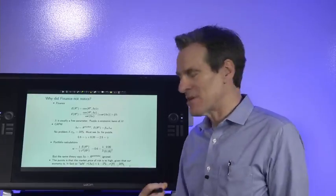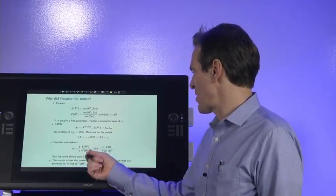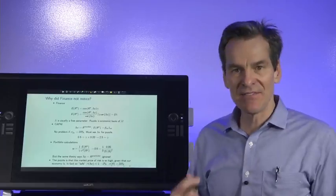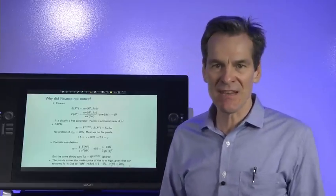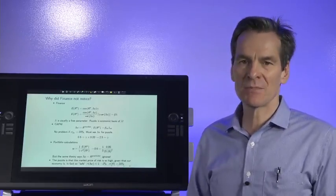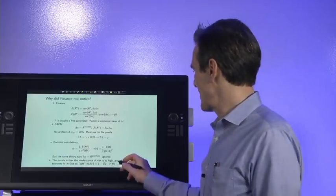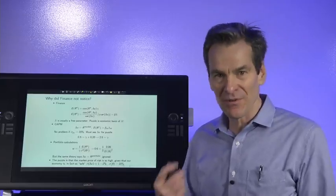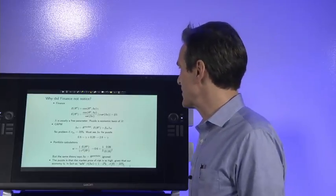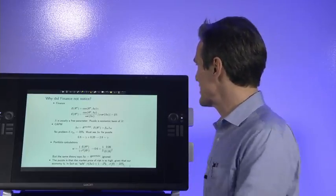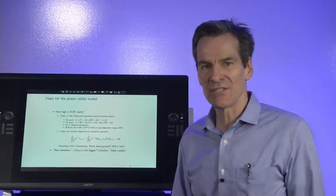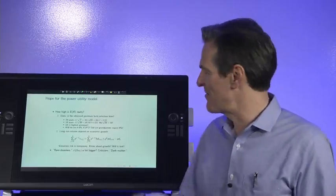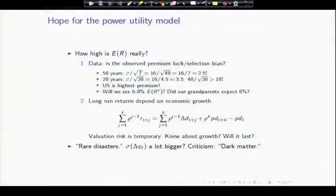The puzzle, the deep puzzle, is why is the market price of risk so high, given that our economy seems to be so safe? One to two percent consumption growth volatility doesn't line up with 20 percent returns. Why do returns vary so much more than consumption growth? That's another way of stating the puzzle. Now, I do want to say there is some hope in recent research for the power utility model. We tend to give up on it. One question for you, thinking through the future.